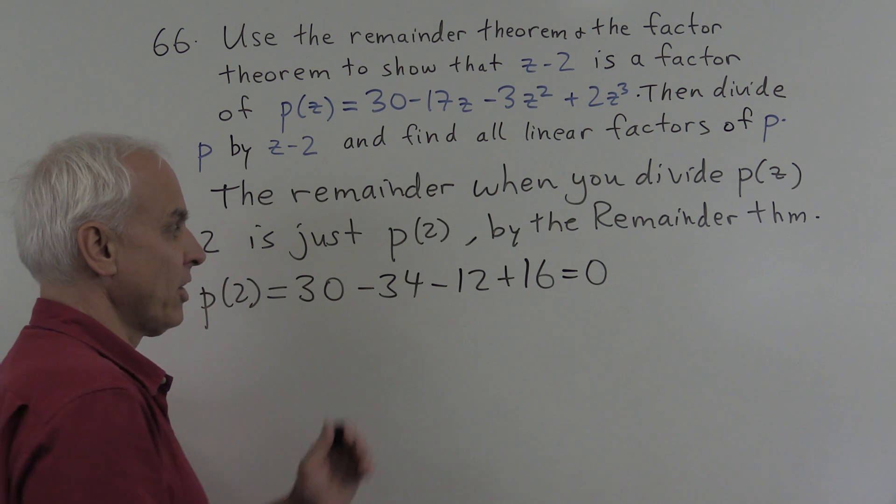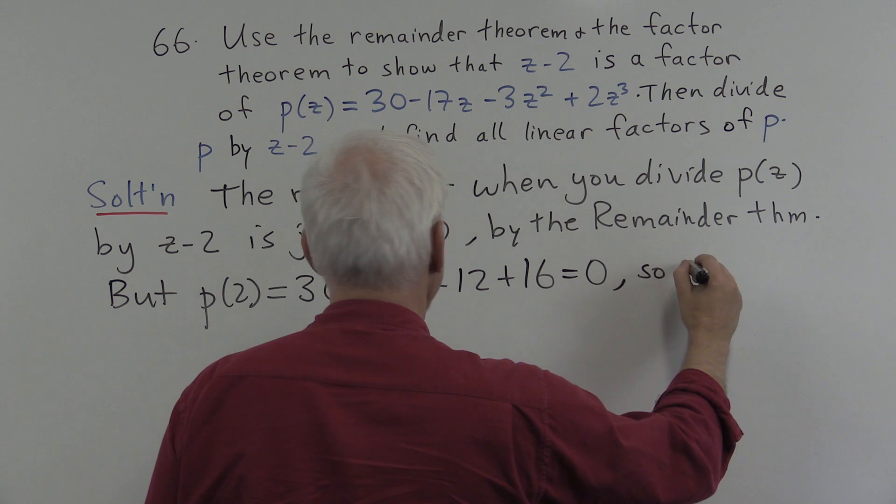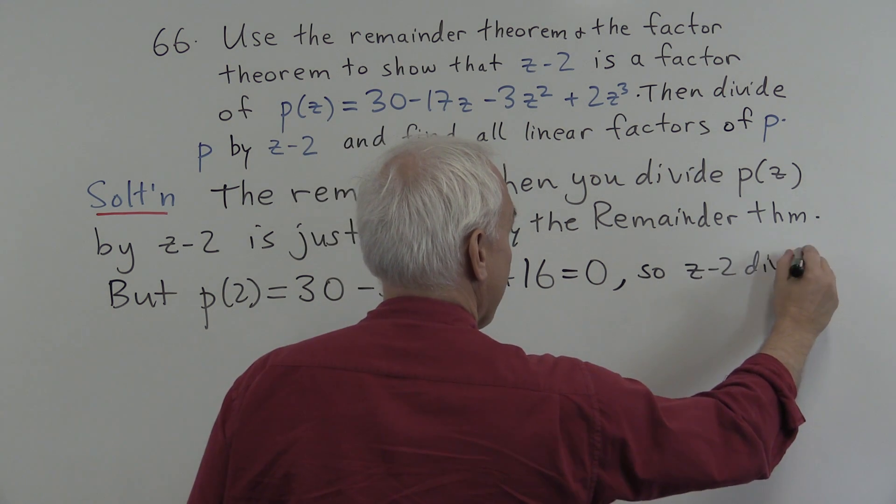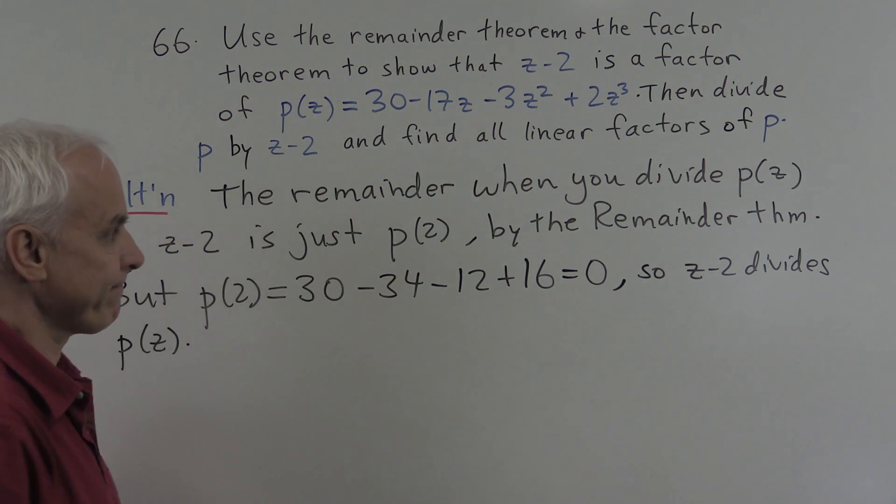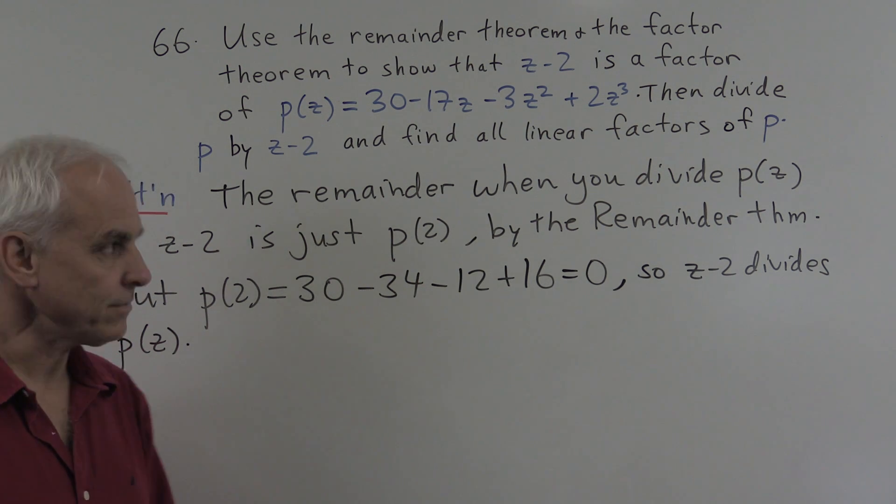So p(2) is 0, so the remainder is 0. So we conclude that z minus 2 divides p(z). It is a factor.